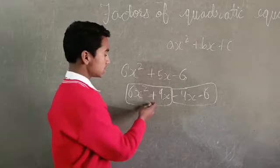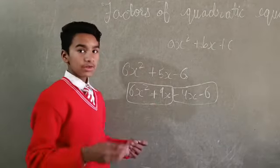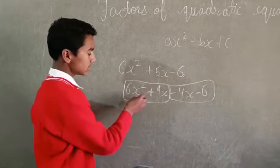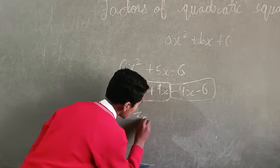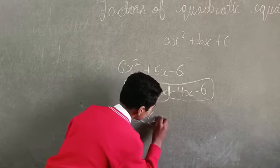We take common from each group. In this group, 3x is common. So, 3x multiplied by 2x plus 3.